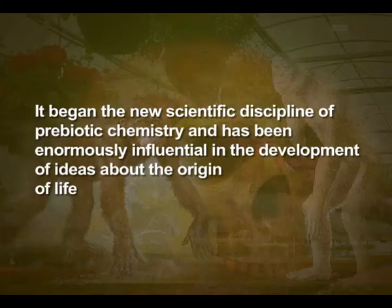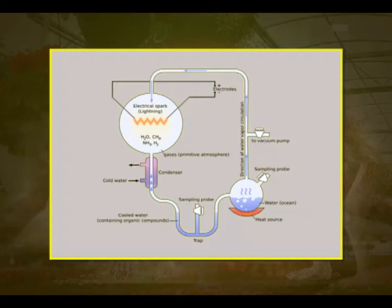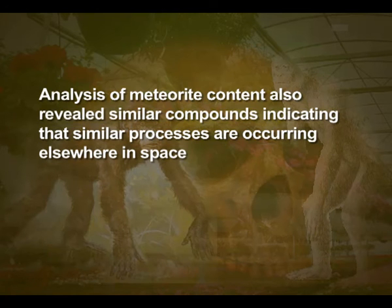Although the significance of specific details of the Miller-Urey experiment for the origin of life may now be in question, it began the new scientific discipline of prebiotic chemistry and has been enormously influential in the development of ideas about the origin of life. In similar experiments, others observed formation of sugars, nitrogen bases, pigments and fats. Analysis of meteorite content also reveals similar compounds, indicating that similar processes are occurring elsewhere in space. With this limited evidence, the first part of the conjecture story — that is, chemical evolution — was more or less accepted.